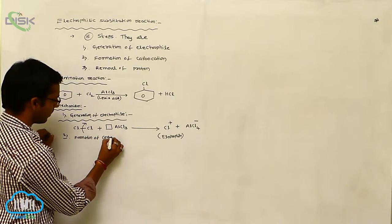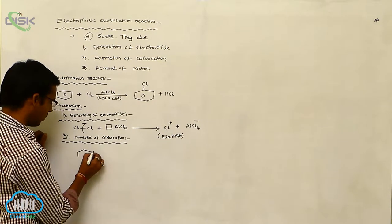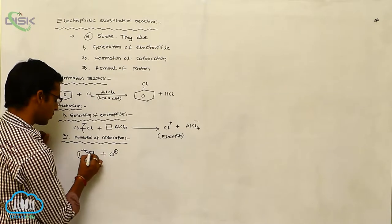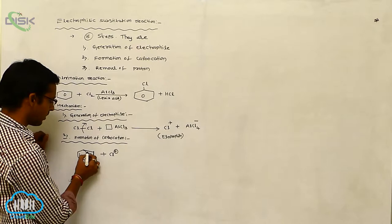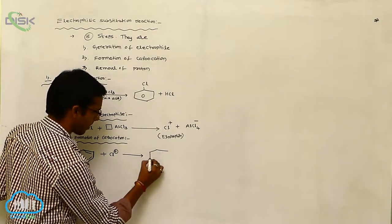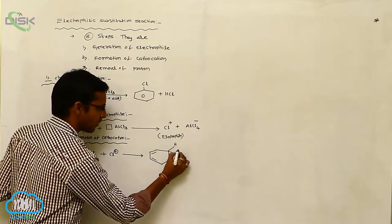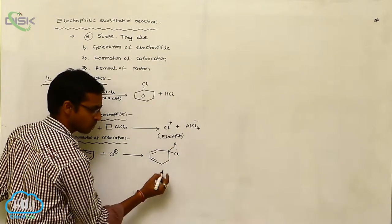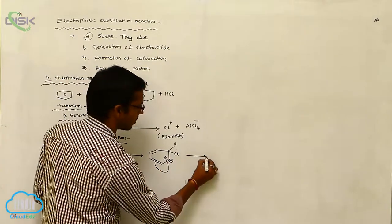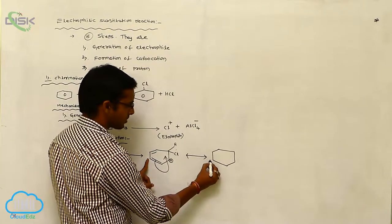The second step is Formation of Carbocation, or attacking of Electrophile on Benzene. When benzene reacts with the electrophile Cl+, it attacks the ring. The pi bond shifts, and the electrophile attaches. This positive charge is neutralized through resonance stabilization, and the intermediate shows different resonating structures.